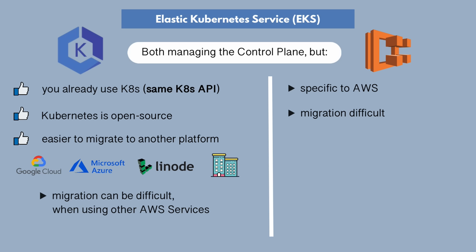You can even use both EC2 and Fargate at the same time for the same EKS cluster. From the hosting perspective — where your containers are running — having EC2 and Fargate as alternatives is pretty much the same whether you use ECS or EKS. This gives you the combination of services available if you want to run a containerized application on AWS using a container orchestration tool.